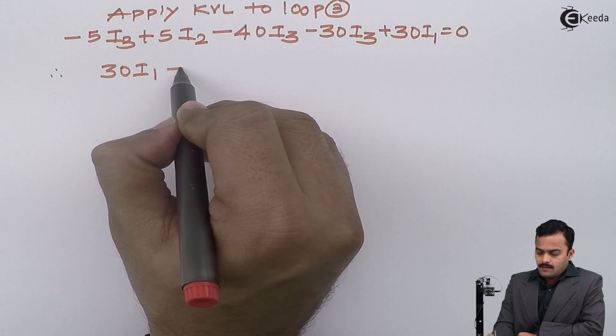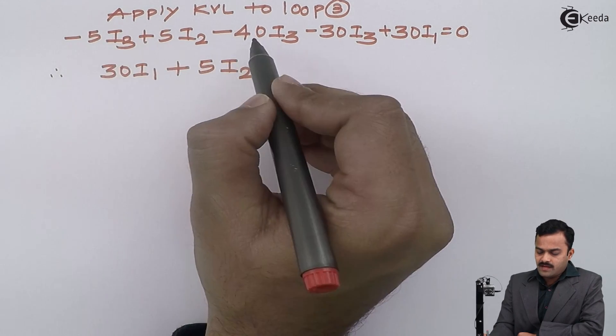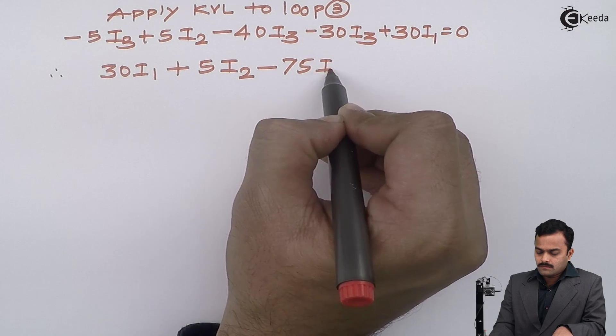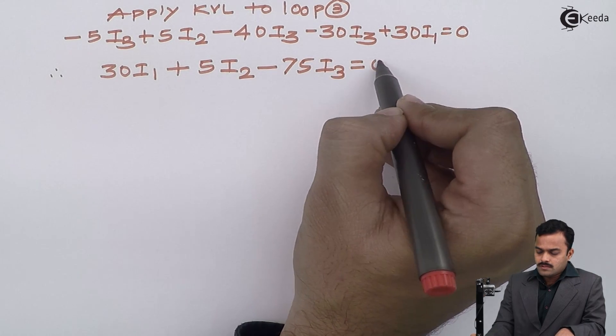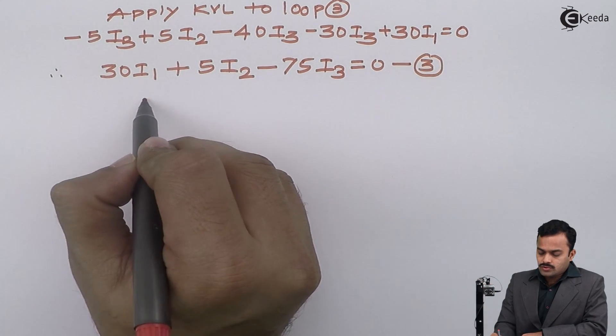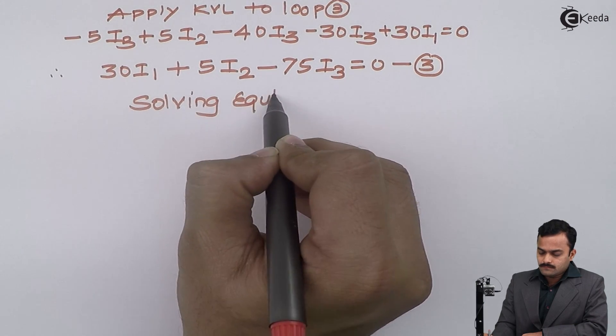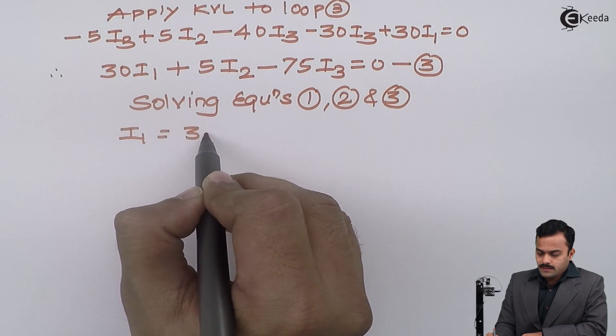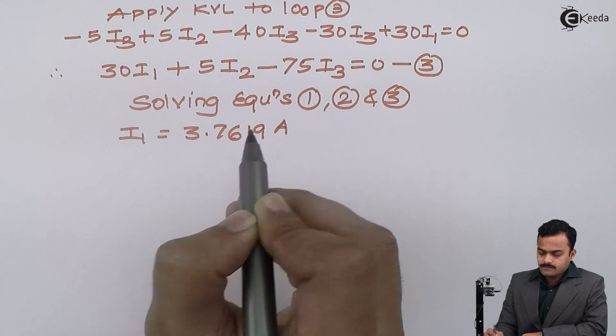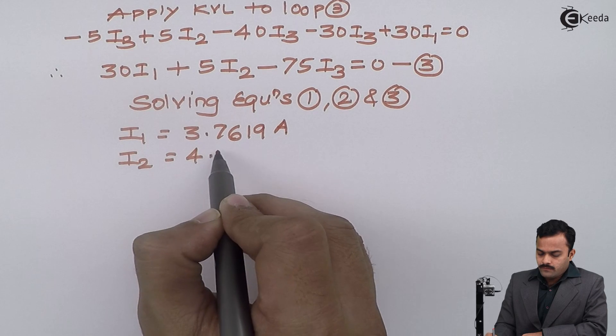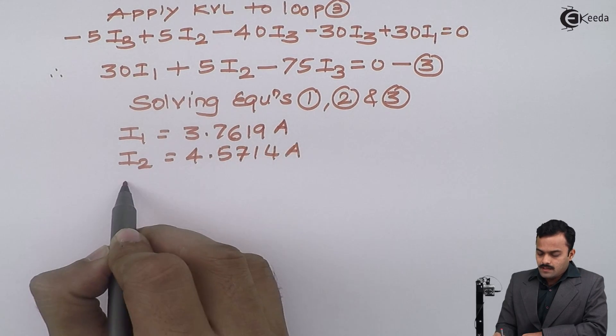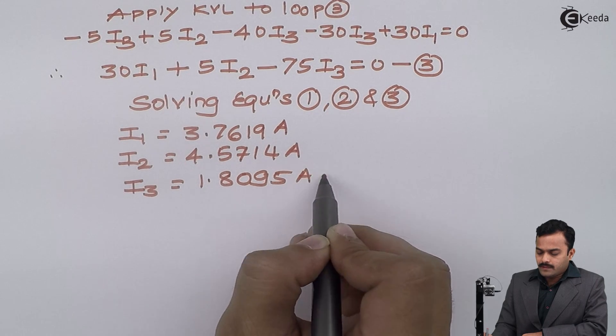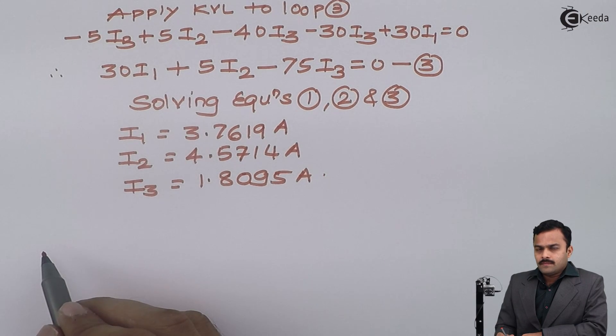After simplifying, I will get 30I1 plus 5I2 minus 5 minus 40 minus 30 will become minus 75I3 equal to 0. Equation number 3. So solving equations 1, 2, and 3, I will get loop currents I1 as 3.7619 amperes, I2 as 4.5714 amperes, and I3 as 1.8095 amperes.